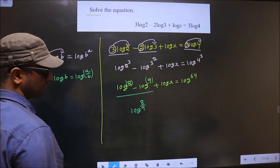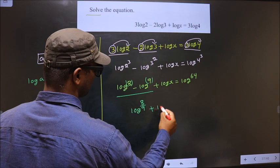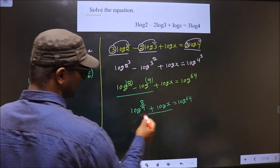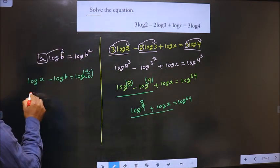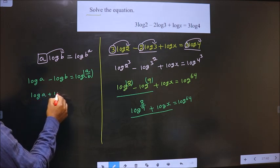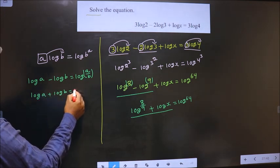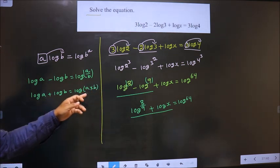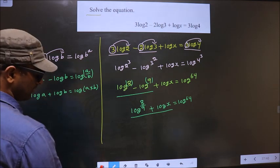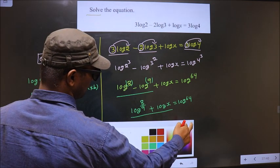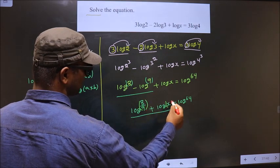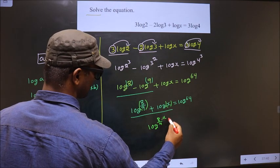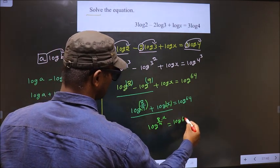Plus log x equals log 64. Now on these two terms we apply the formula: log a plus log b equals log a times b. When you have addition, the result is multiplication. So we get log of 8 by 9 times x equals log 64.